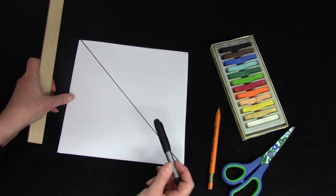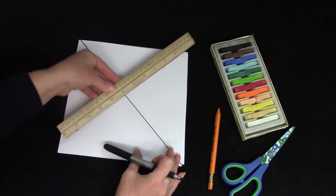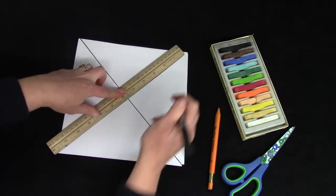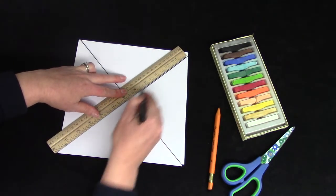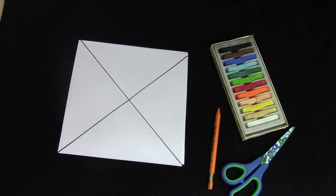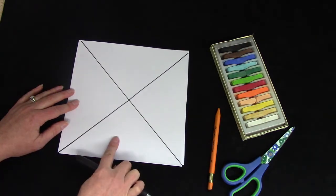But I don't want mine to be two pieces. I want it to be four. So I'm going to draw a line from one side to the other. How many pieces do I have now? One, two, three, four.